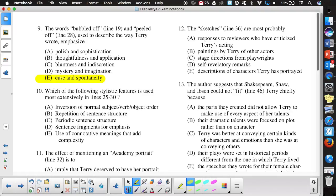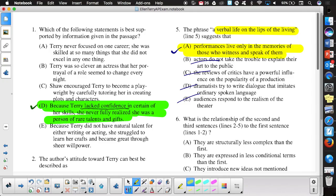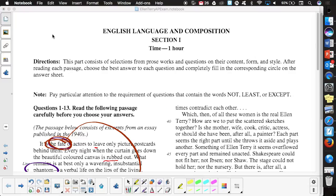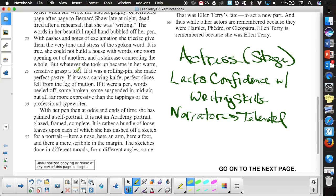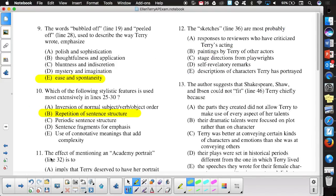Which of the following stylistic features is used most extensively in lines 25 to 30? This is one we want to get. B, B, B, B. The effect of mentioning an academy portrait. Down line 32. When it does get mentioned, take note of some words by it. With her pen, then at odds, at the end of time, she has painted a self-portrait. It is not an academy portrait. So, if it's not a portrait, it is probably then going to do what?